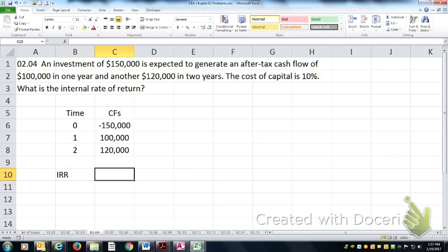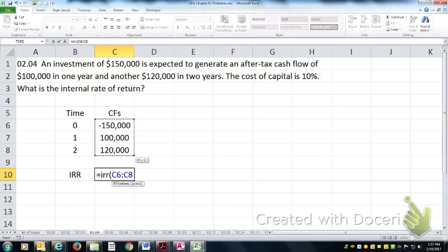The IRR calculation in Excel is fairly simple. The function is equals IRR, and then you have to cover all of the values from time zero to time n. So unlike the NPV function which omits time zero, the IRR calculation requires it.